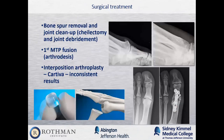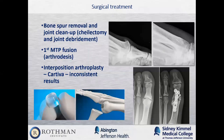For surgical options, there are three main choices. A cheilectomy involves removal of the bone spur and joint debridement, removing loose tissue or cartilage flaps contributing to symptoms. This is for mild to moderate cases.